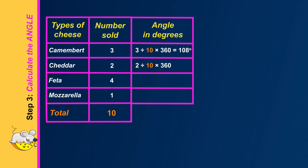There are two cheddar out of a total of ten — two tenths — multiplied by 360, which equals 72 degrees. For feta, it's four out of ten multiplied by 360 to get 144 degrees. Lastly, for mozzarella, it's one divided by ten multiplied by 360 to get an angle of 36 degrees.